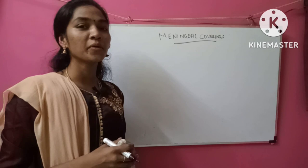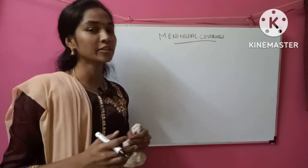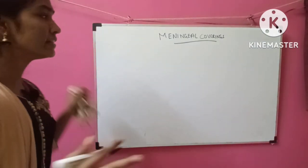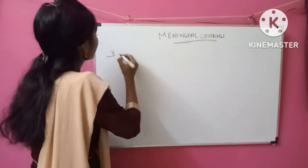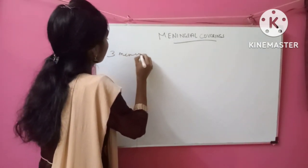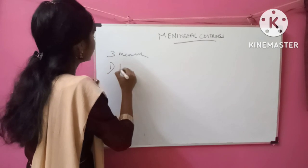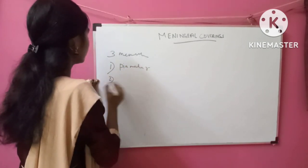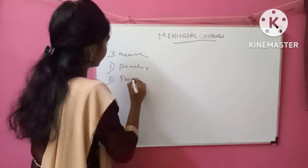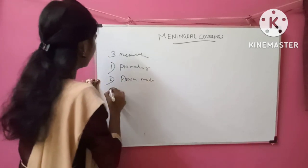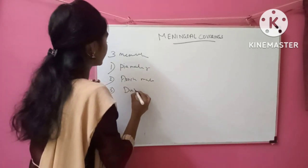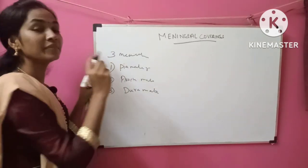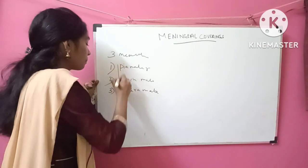Hello friends, today we are going to discuss the topic of meningeal covering of the central nervous system. There are three membranous coverings. First is pia mater, second is arachnoid mater, third is dura mater — pia, arachnoid, and dura. You have a mnemonic: PAD.